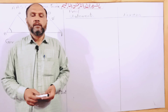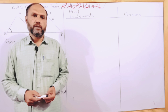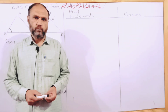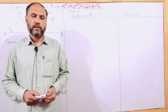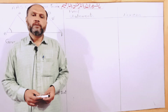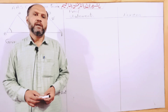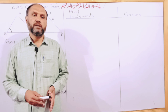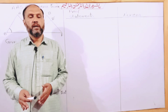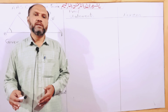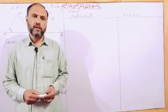Bismillahirrahmanirrahim. I am going to lecture the 9th class of Maths, theorem number 10.1: Angle-Angle-Side congruence theorem. The theorem statement is that if two angles and a non-included side of one triangle are congruent to the two angles and non-included side of another triangle, then the triangles are congruent.